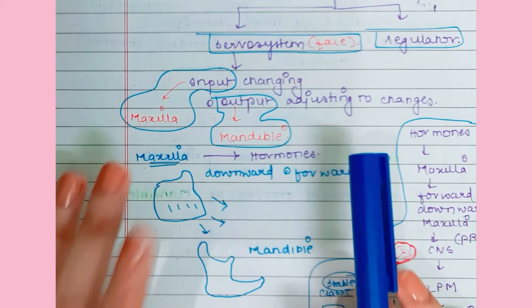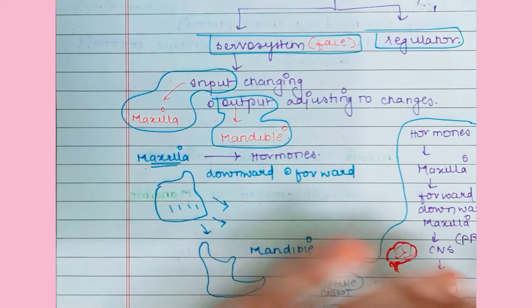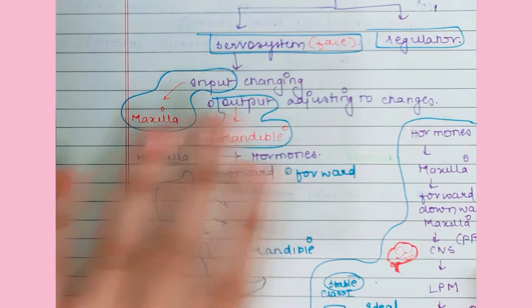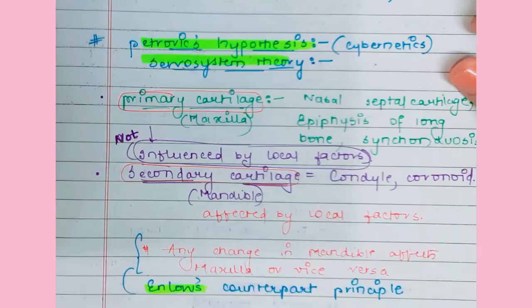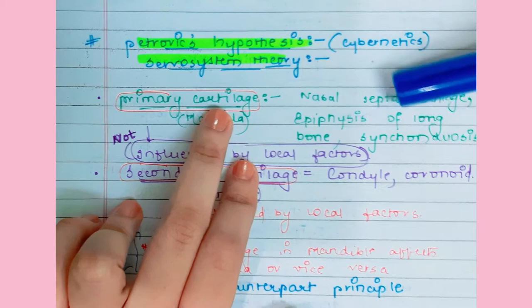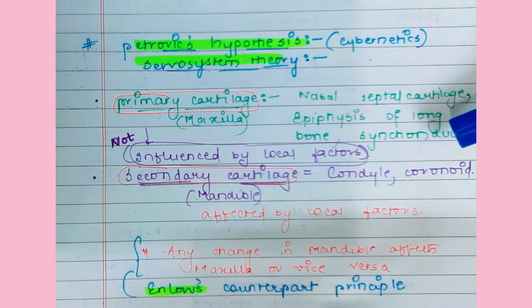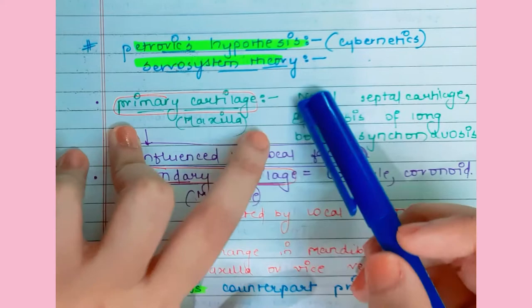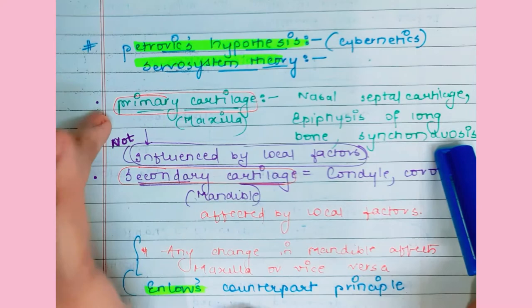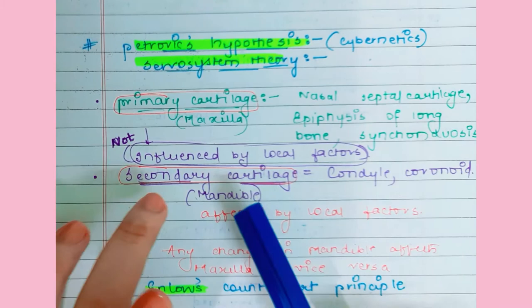The maxilla grows in a downward and forward direction due to the influence of the nasal cartilage and the cranial base. The nasal septal cartilage and cranial base synchondroses — which are primary cartilages — push the maxilla anteriorly and downward. These primary cartilages are not influenced by local factors, unlike secondary cartilages such as the condyle.